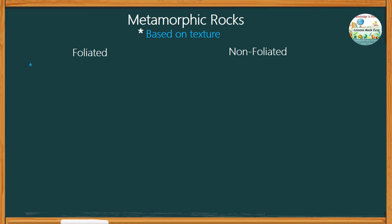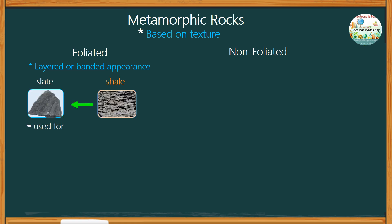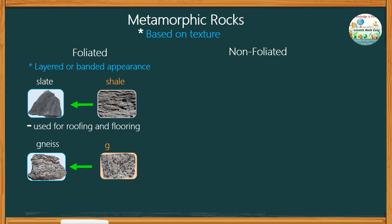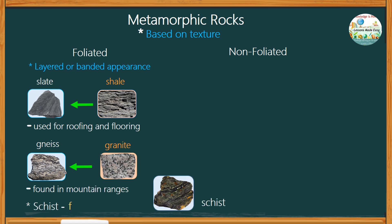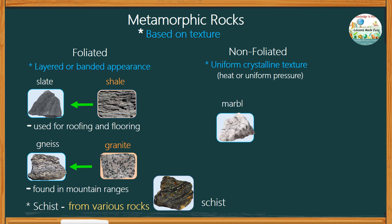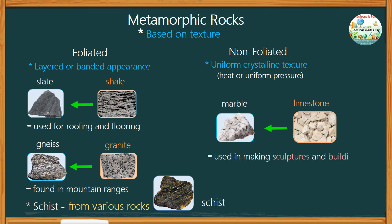Based on their texture, metamorphic rocks are classified as foliated or non-foliated rocks. Foliated rocks have a layered or banded appearance due to pressure — for example, slate, which is formed from shale, is used for roofing and flooring. Another example is gneiss, formed from granite, found in mountain ranges. Schist is formed from various rocks and is highly foliated with visible minerals. Non-foliated rocks have a uniform crystalline texture due to heat or uniform pressure — for example, marble, which is formed from limestone, is used for making sculptures and buildings.